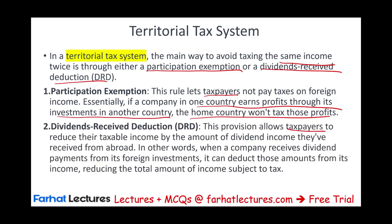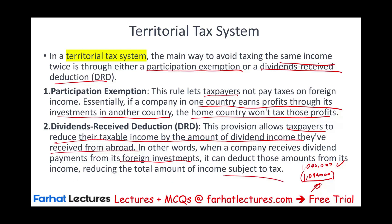Or we can have the dividend received deduction. This provision allows taxpayers to reduce their taxable income by the amount of dividend income they received from abroad. For example, if one U.S. company owns stocks in another company in Australia, and that company paid them a million dollars in dividends, they would report the dividend, then they will have a million dollar dividend received deduction, and their taxable income is zero. When a company receives a dividend payment from a foreign investment, it can deduct those amounts from income, reducing the income subject to taxation.